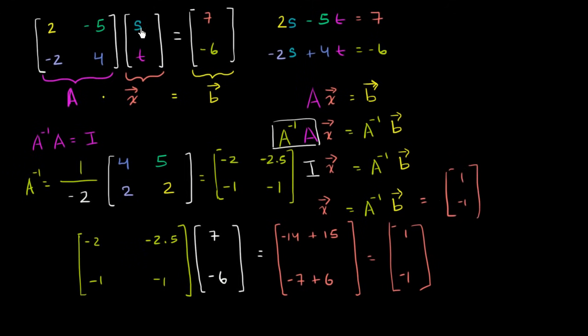So we have just shown that this is equal to one negative one, or that X is equal to one negative one, or we could even say that the column vector ST, column vector with the entries S and T, is equal to one negative one, which is another way of saying that S is equal to one, and T is equal to negative one.